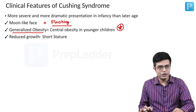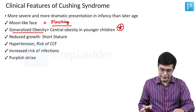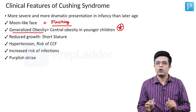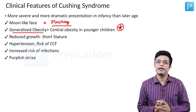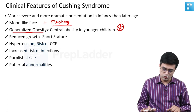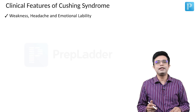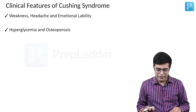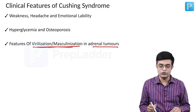Other features include reduced growth leading to short stature, hypertension, risk of congestive cardiac failure, increased risk of infections, and purplish striae — particularly in the flank region, thighs, and sometimes the deltoid region. Pubertal abnormalities are also common. Weakness, headache, and emotional lability may be present; in adults this can progress to frank psychosis. Hyperglycemia, osteoporosis, and virilization in females with adrenal tumors can also occur.